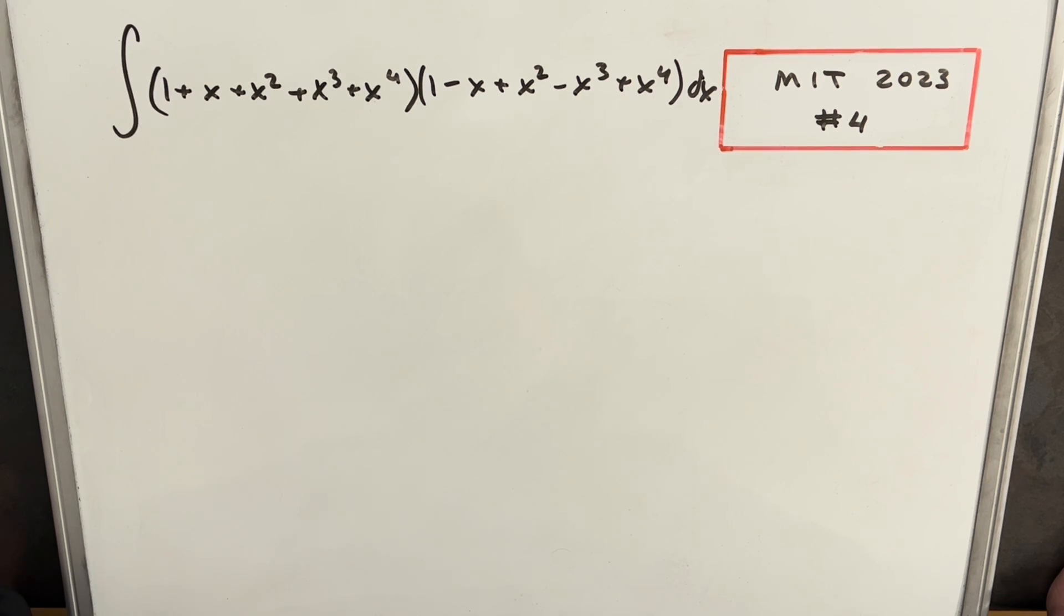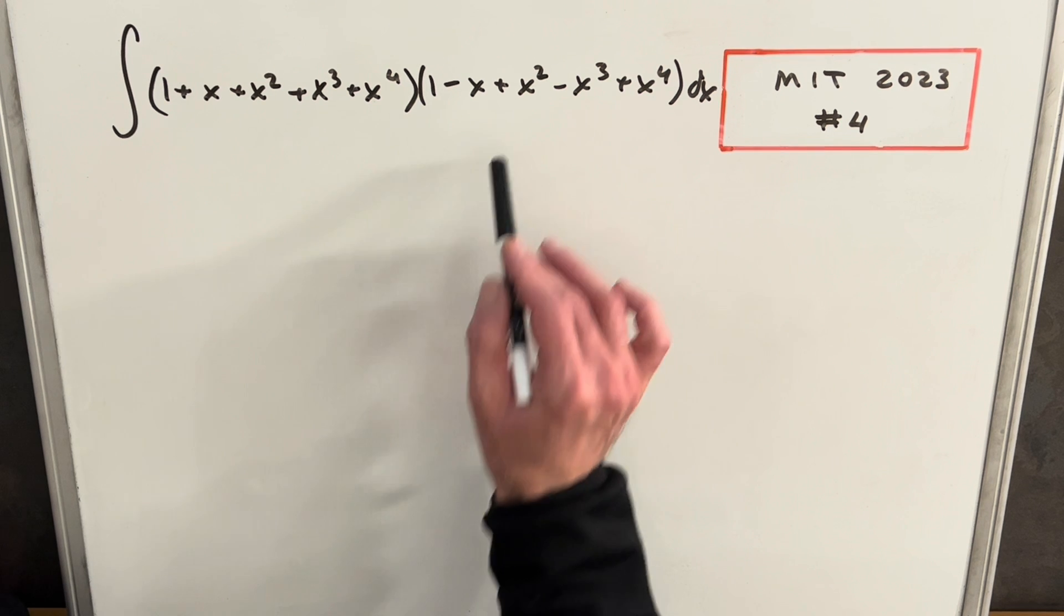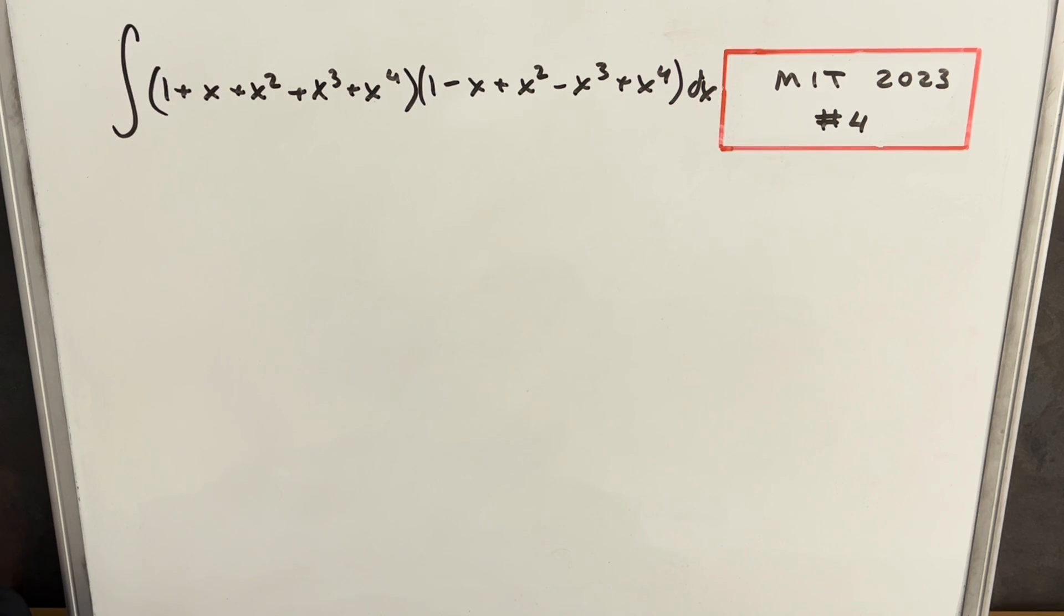Okay, so we have a really long integral here. Let's take a look and see what we can do with it. There's a lot of different ways we could multiply it out. That would be kind of tedious if we just multiply it out—it'd be easy, but it would just be slow. So let's see if we can find a way to manipulate these terms and make it a little easier on ourselves.